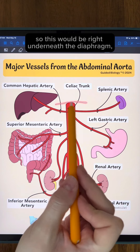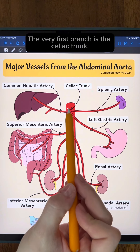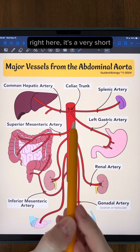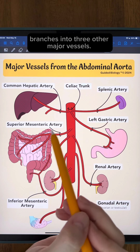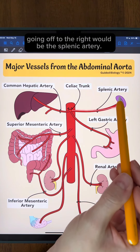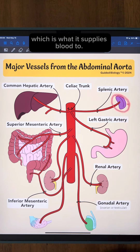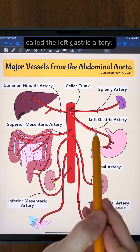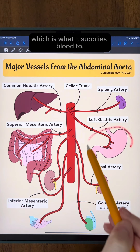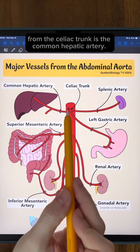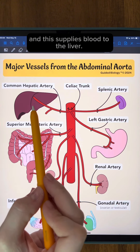So let's start at the top, right underneath the diaphragm where the abdominal aorta starts. The very first branch is the celiac trunk, which is a very short little branch that then almost immediately branches into three other major vessels. The first one going off to the right is the splenic artery, which supplies blood to the spleen. Then we have the left gastric artery, which supplies blood to the stomach. And the third branch from the celiac trunk is the common hepatic artery, which supplies blood to the liver.